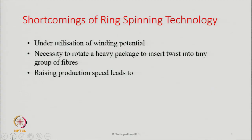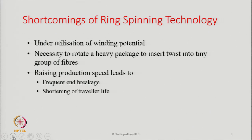The next shortcoming is that raising production speed leads to frequent end breakages. That means we will not be able to raise the speed too much. We face this problem that the breakage rate will go high, and therefore there is a limit to which we can go. The other one is shortening of traveler life — if we go for higher speed, the traveler is made to rotate also at a faster rate and therefore the traveler life is shortened.